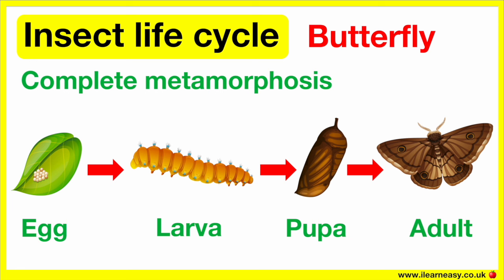Now, the adult butterfly can mate and lay eggs to repeat the cycle.